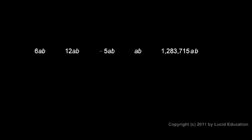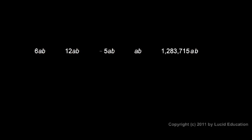Here's an example. 6AB is a term, and 12AB is a term, and negative 5AB. And AB, remember, is the same as 1AB. And here's 1,283,715 AB. In every single one of these, the variable part is AB. So these are all like terms. In fact, we could say they are all AB terms, referring to the AB variable part.